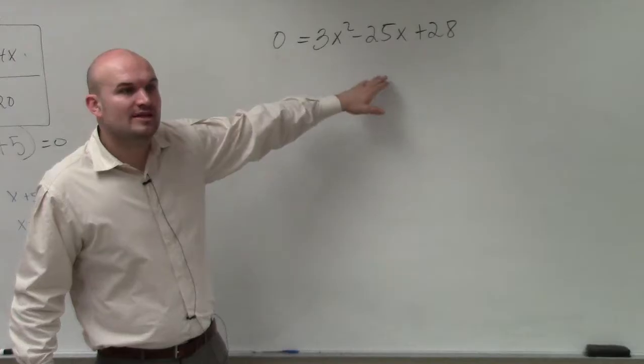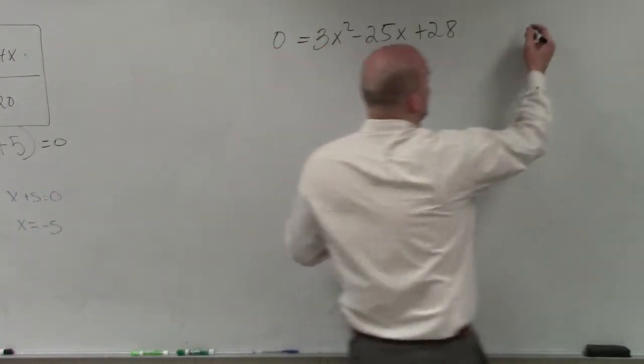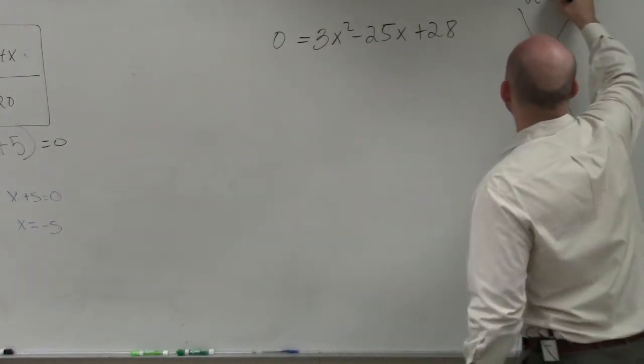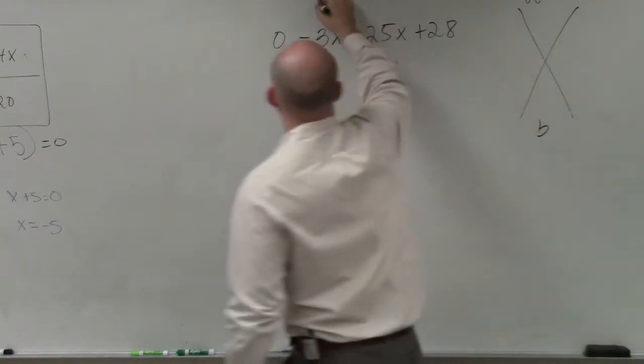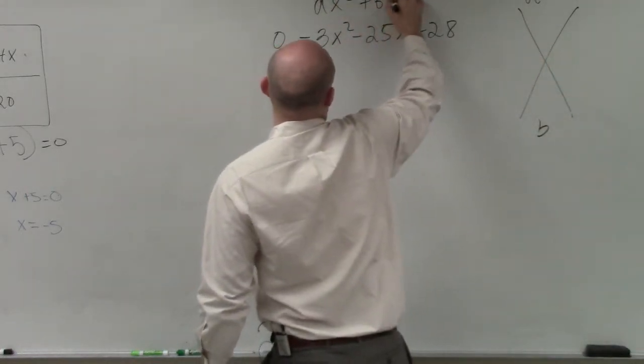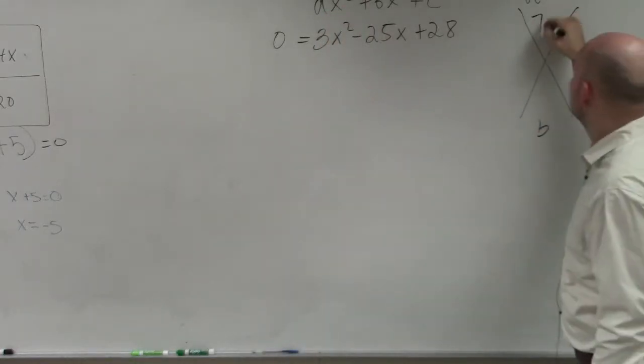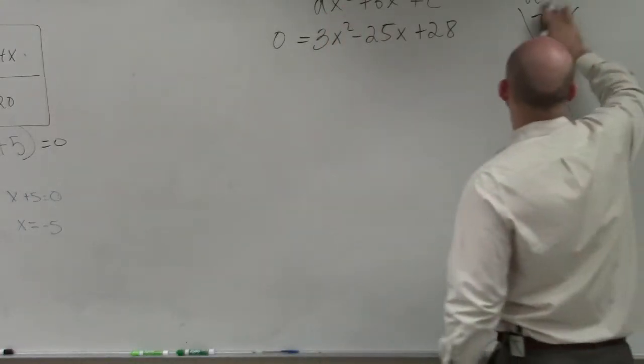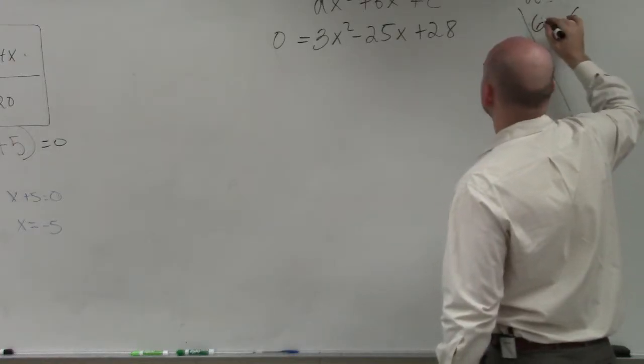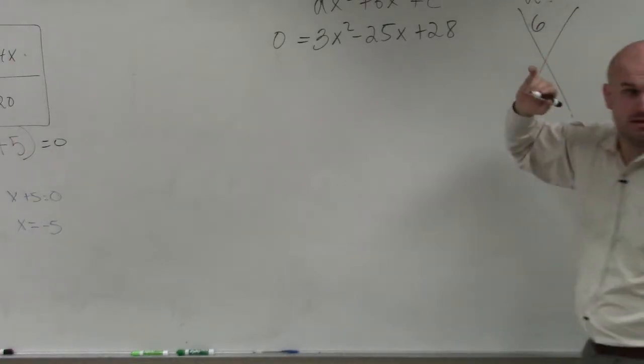However, when doing this technique, the same thing is going to be the case. We still need to determine a times c and b. So ax squared plus bx plus c. So a times c in this case is 3 times 28. You have to do it that way.